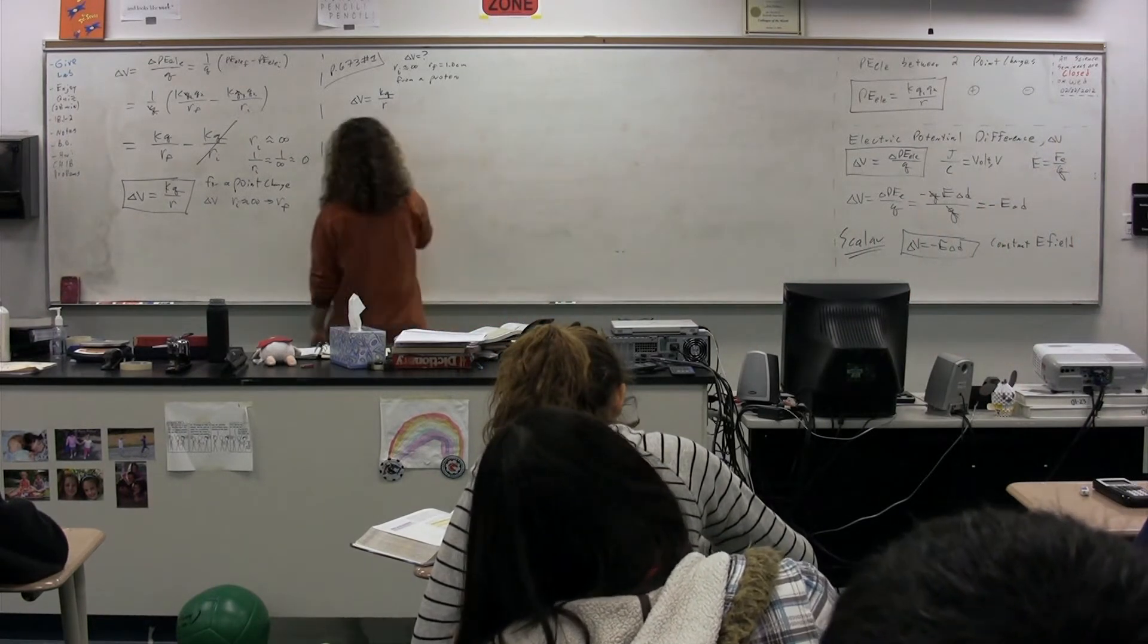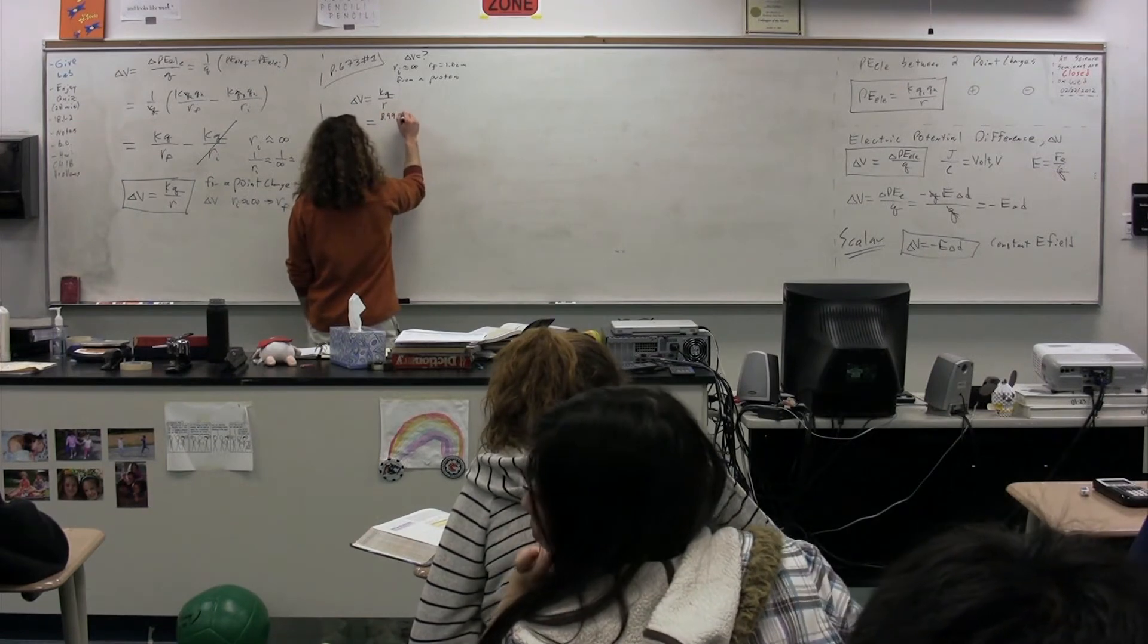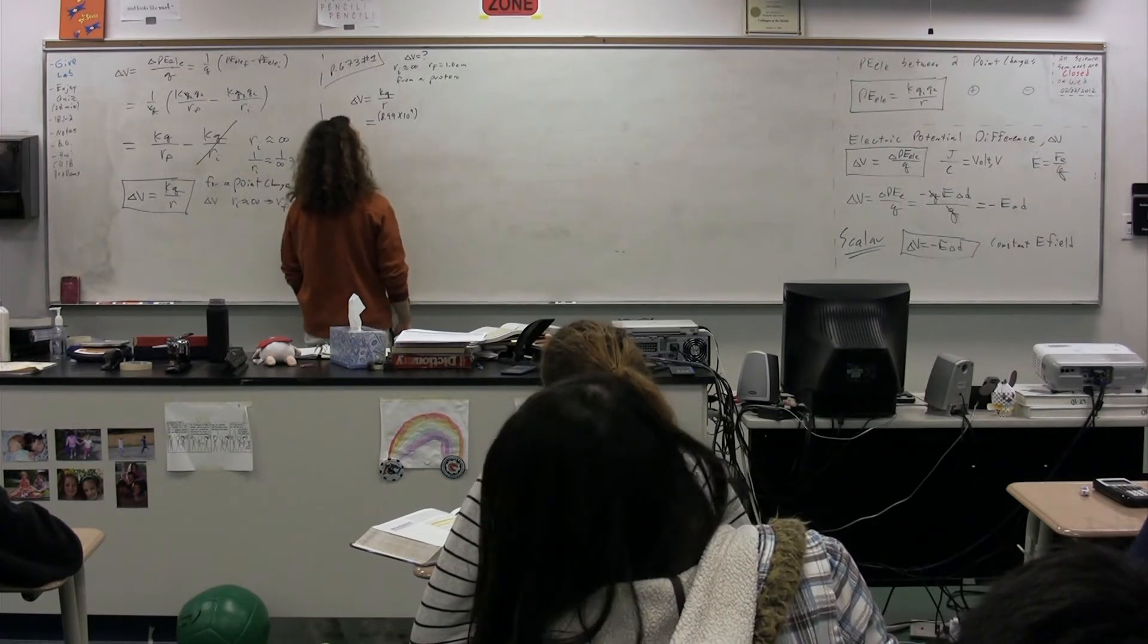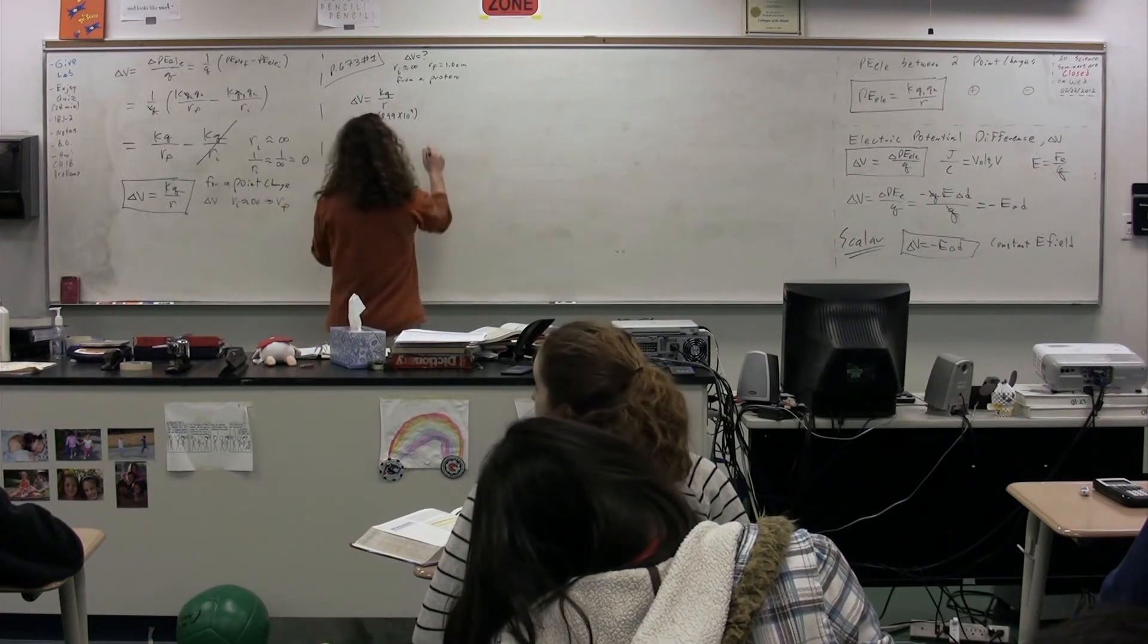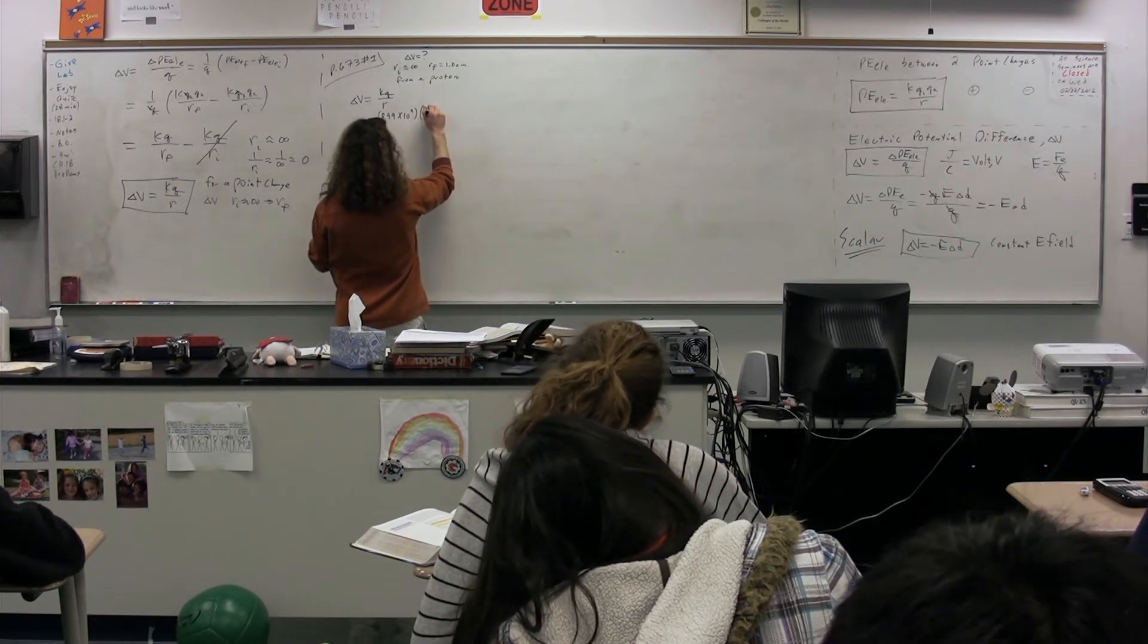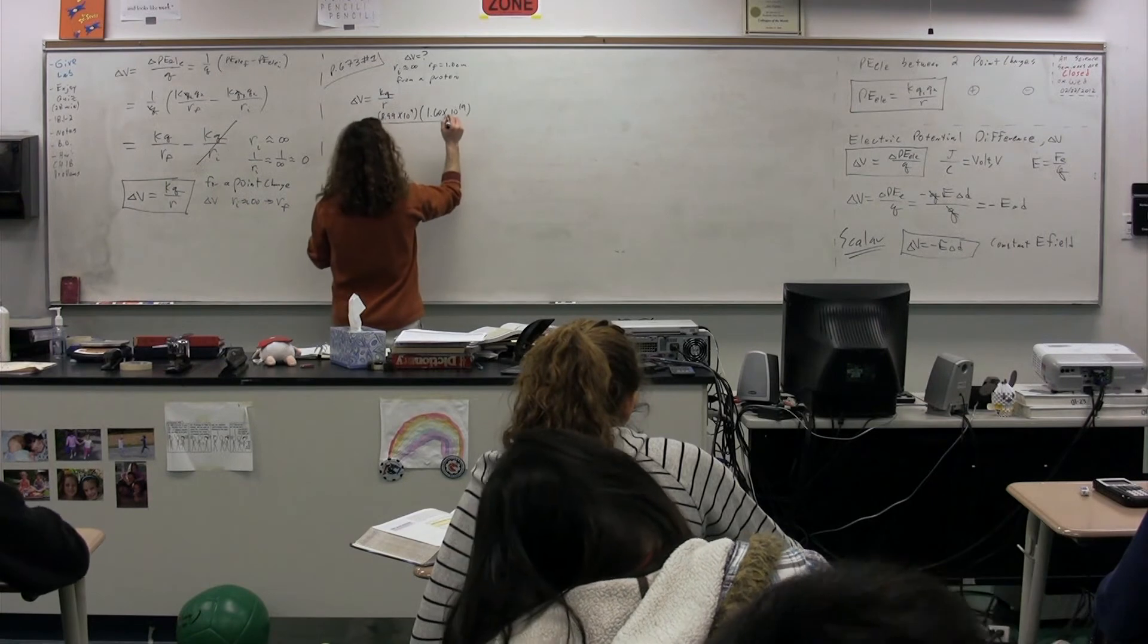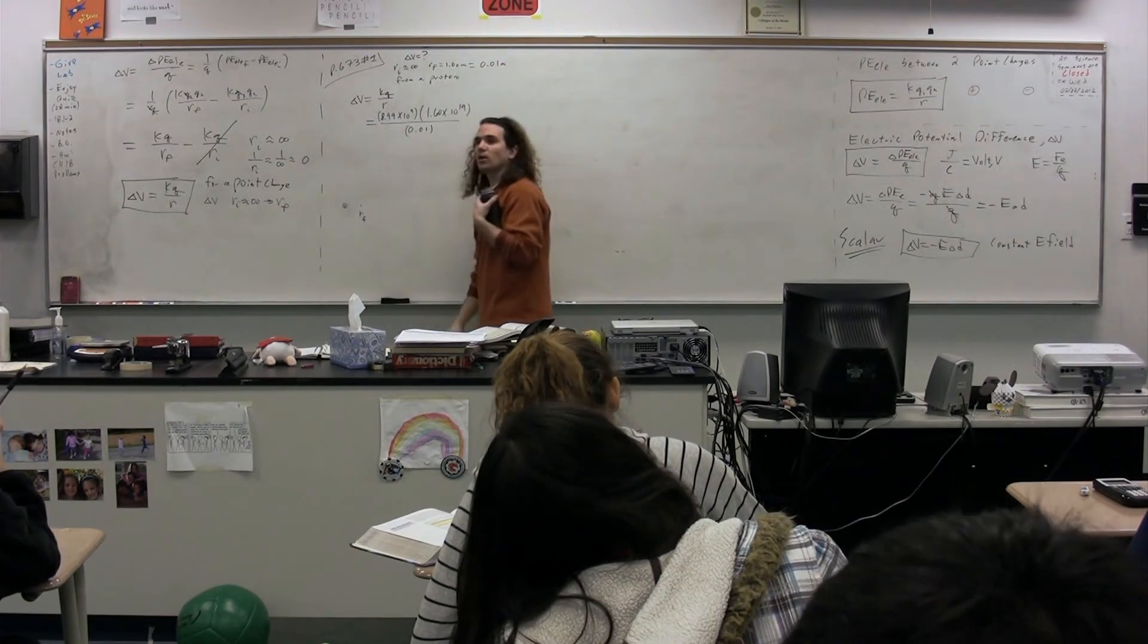Please give me, Andy, all the numbers here. KQ over R. K is equal to 8.99 times 10 to the 9. And then Q is a proton so it's going to be positive 1.6 times 10 to the negative 19. And then R is 0.01 meters. Again, I pointed out that we can do that simple conversion in your head to 0.01 meters.